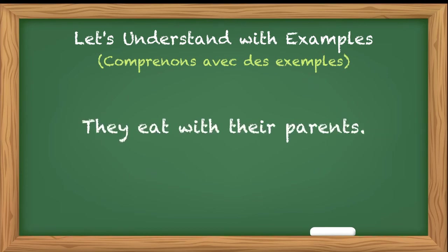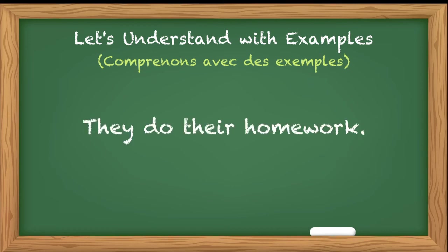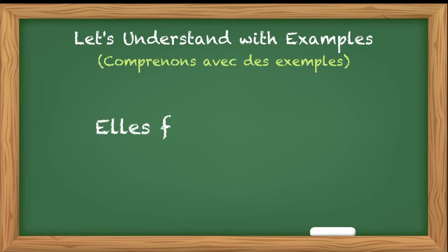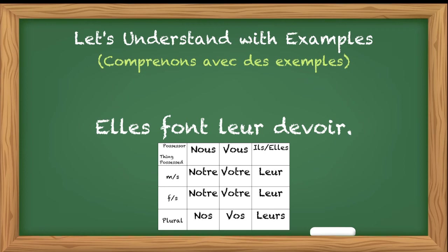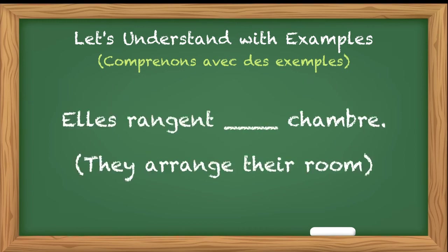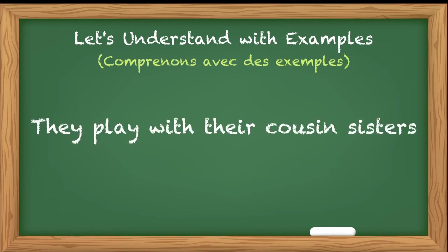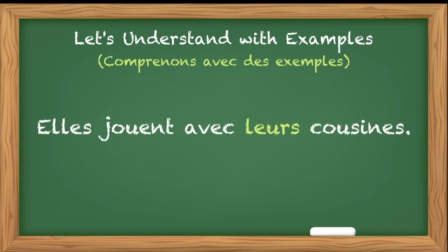One more sentence: 'They eat with their parents.' Here we use leurs because parents are plural — LEURS. Now 'They do their homework.' Here devoir is masculine singular, so we refer to the table with ils plural and use leur with a masculine singular noun — leur devoir. Similarly, 'They arrange their room' — again leur because chambre requires checking gender. 'They play with their cousin sisters' — Elles jouent avec leurs cousines — leurs because plural.